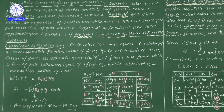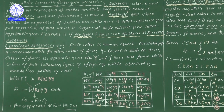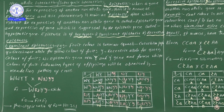Epistasis is of two types: dominant epistasis and recessive epistasis. These are the important types, and a few technical words you have to remember here.